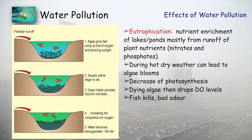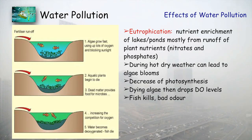Eutrophication is the nutrient enrichment of lakes and ponds. When too much fertilizer and pesticide is used, it flows into nearby lakes, causing excessive growth of algae, turning the lake greenish in color. Other plants will not get enough nutrients and will die. The greenish surface also does not allow radiation to penetrate the water, reducing photosynthesis of plants inside the lake.